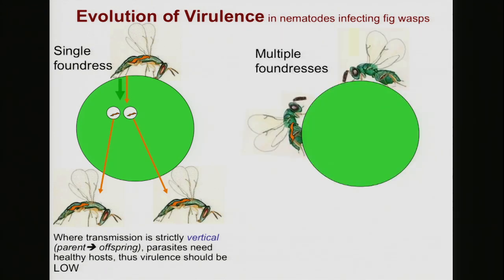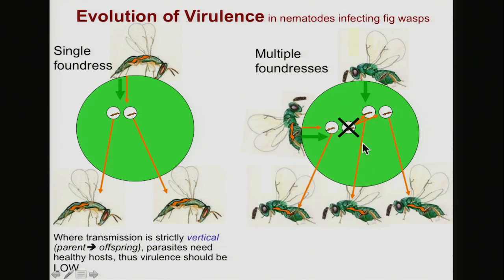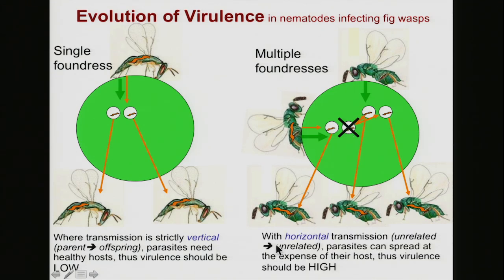But there are other species of fig wasps where multiple foundresses lay their eggs in the same fig. In this case, there's a chance for transmission to go from one set of eggs to another — sideways in the same generation. That's called horizontal transmission. Here it can pay to be really nasty to your current host if by doing so you're able to infect lots of new hosts. The parasites can spread at the expense of their host and still end up with more copies of themselves even if they kill their current host.